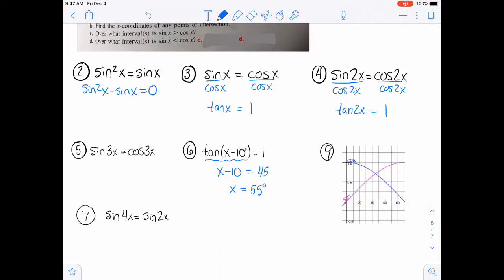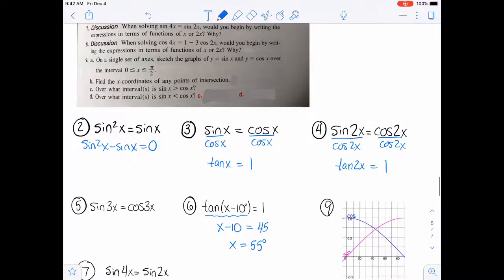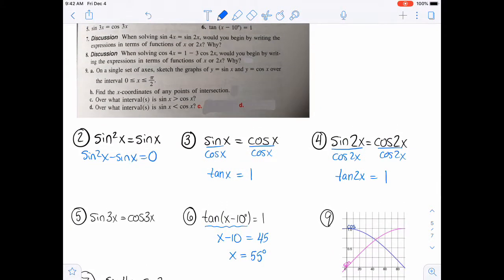7, we are going to work completely out. I'm not going to work number 8 completely out because that is one that you're going to do in the assignment. But I will answer the question, when solving number 8, cosine 4x equals 1 minus 3 cosine 2x, would you begin by writing in terms of x or 2x? And you would want to do 2x because there is that combination of different things there. You'd want to do 2x. And then number 9, let's look at that and then we'll backtrack and get 7.